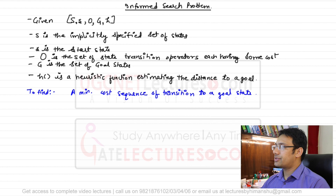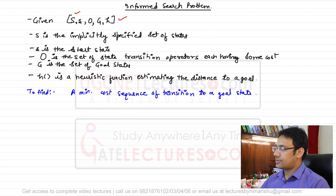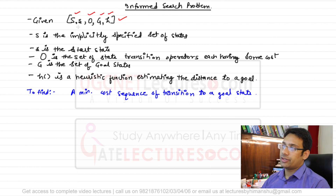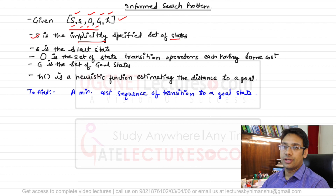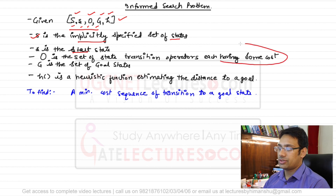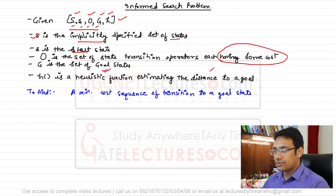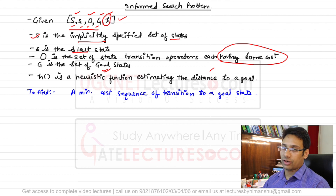In informed state space search, the problem is defined by five tuples: capital S, small s, O, G, and H. Capital S is the specified set of states, small s is the start state, capital O is the set of state transition operators with associated costs, G is the set of goal states, and H is the heuristic function.